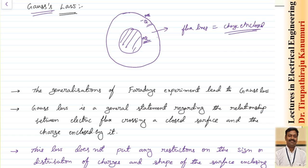He also observed that the value of the charge can be due to multiple distributions — either a point charge, a line charge, a surface charge, or a volume charge. In all cases, the amount of flux lines coming out is exactly equal to the total value of the charge enclosed inside the surface.